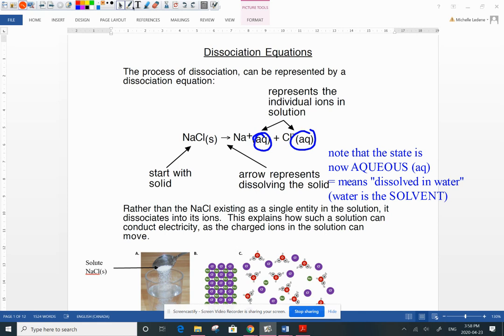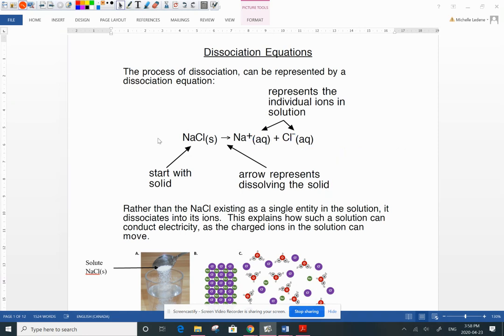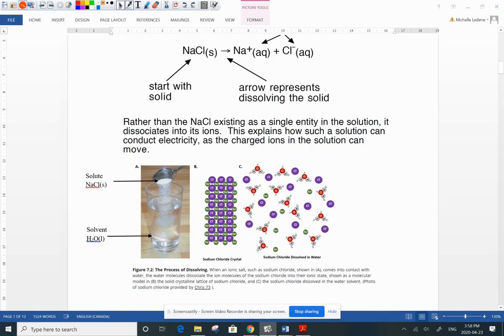And you'll notice that now there's a change and we see the state has changed. We write aqueous AQ. Why? Because now each sodium and chloride ion are dissolved in water. Water is the solvent here. So swimming around, not really I'm just using that word they don't actually swim, but in the solution what do we see? Well we see these negative chloride anions and we see the positive sodium cations.